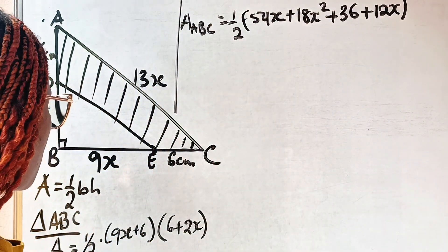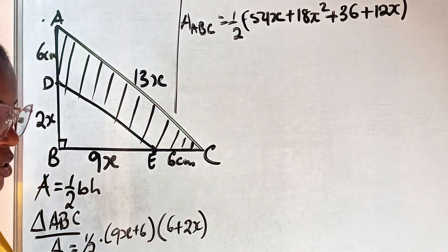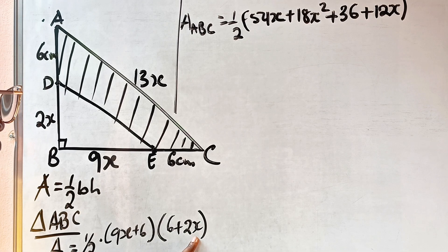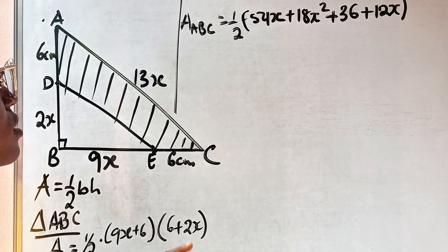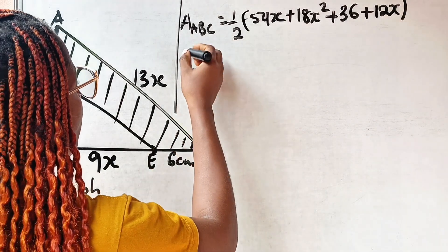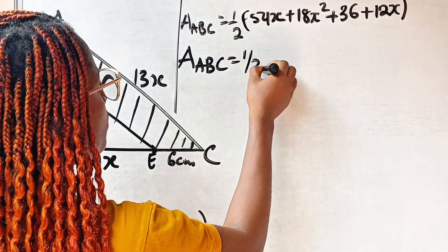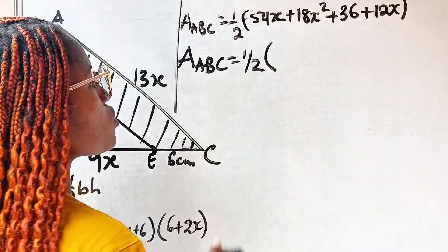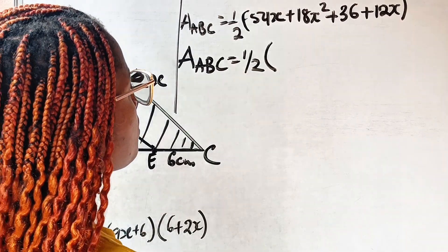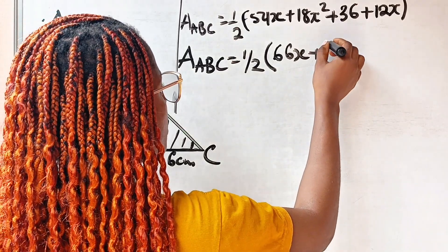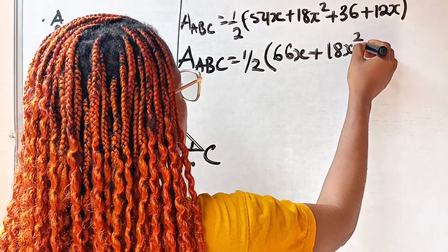Moving forward, let me cross-check. 9x times 6 gives 54x. 9x times 2x gives 18x squared. 6 times 6 is 36, and 6 times 2x is 12x. So we have the area of triangle ABC equal to half bracket: 54x plus 12x gives 66x, so we have 66x plus 18x squared plus 36.